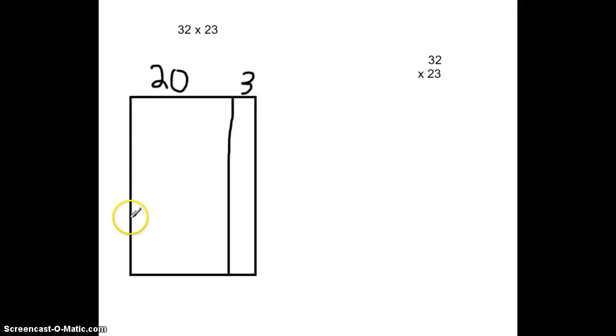Likewise, the other side, we can break up into easy numbers, and we're going to say it's 30 and 2. So 30 plus 2 more for 32.